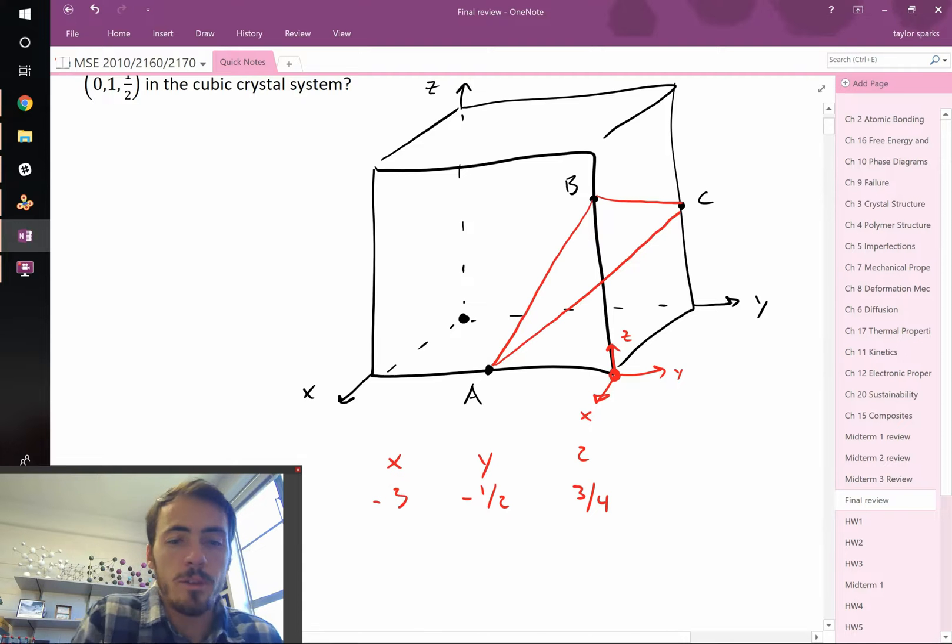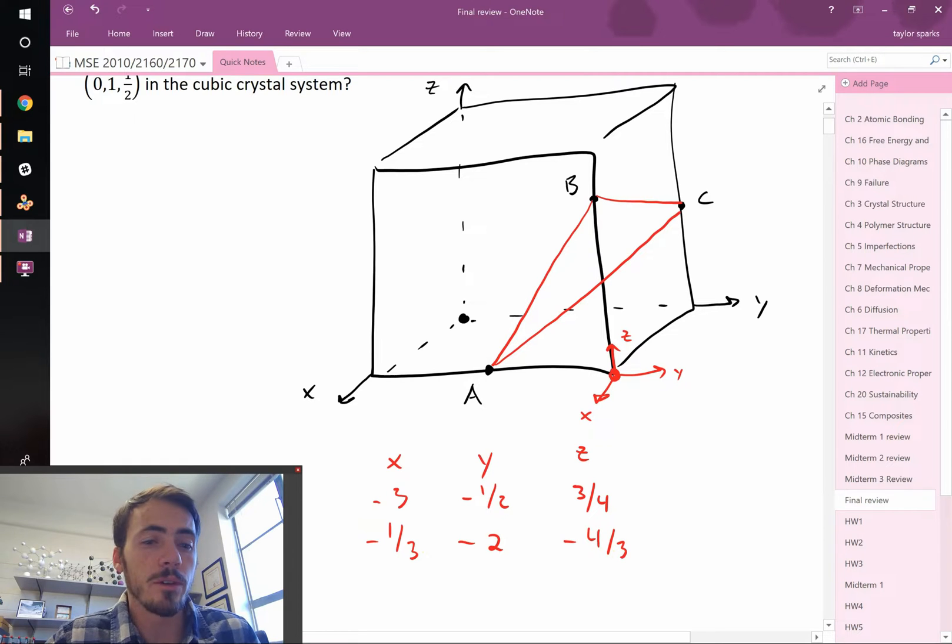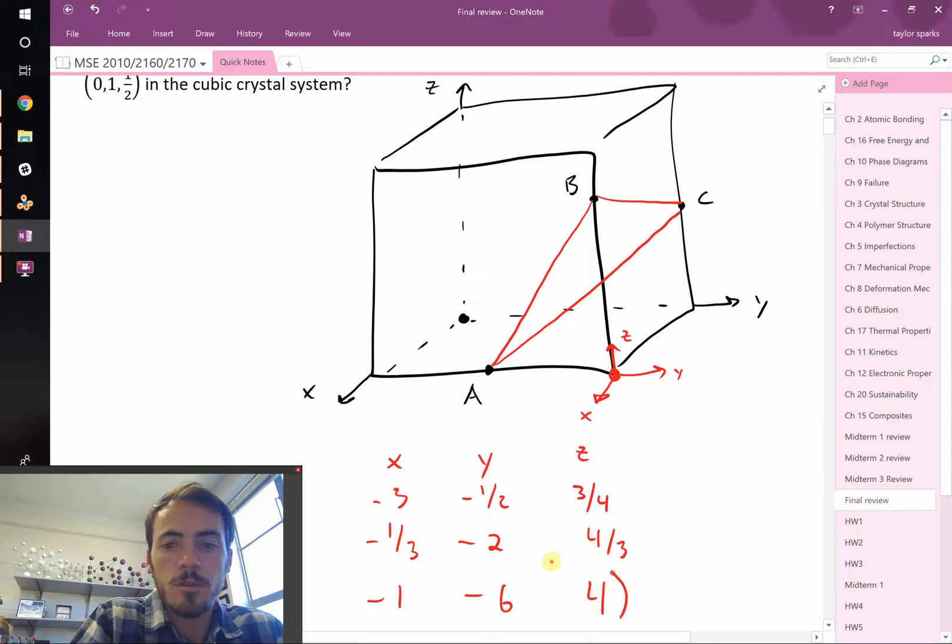Once you figure out where it intersects the x, y, and z, we know how to finish this. We simply have to do the inverse. So we take the inverse: this becomes negative one-third, this becomes negative two, this becomes four-thirds. And then we turn these into integers by multiplying all of these by three, and that becomes negative one, negative six, and four. So that would be our Miller indices for the plane that contains those points.